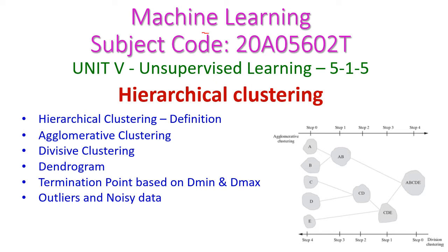In this machine learning class, we will see hierarchical clustering from the 5th unit on unsupervised learning. We will cover the hierarchical clustering definition, agglomerative clustering, divisive clustering — the two types of hierarchical clustering methods — followed by the dendrogram of hierarchical clustering, the termination point based on Dmin and Dmax, and finally outliers and noisy data.